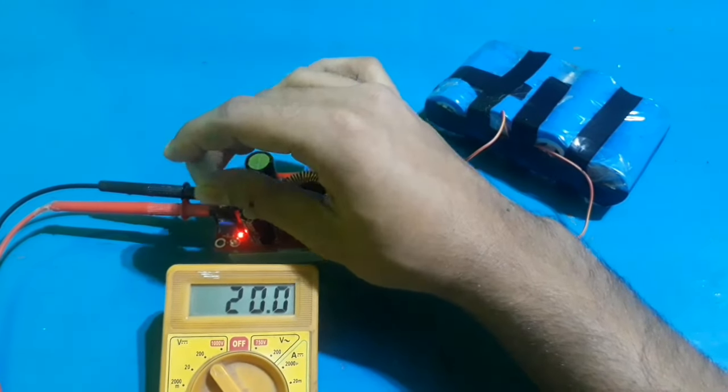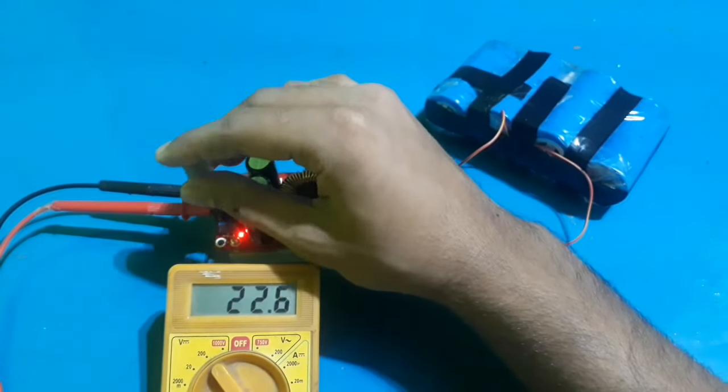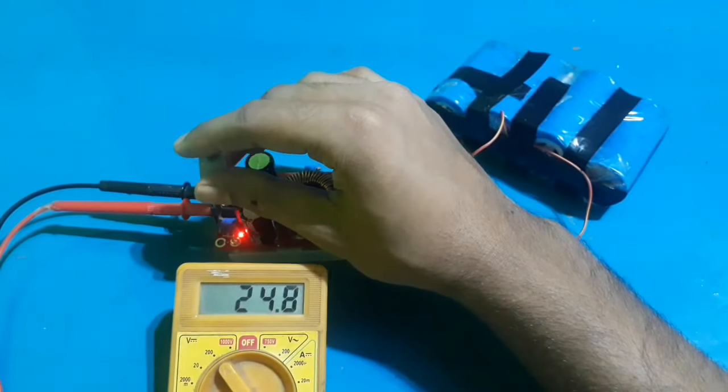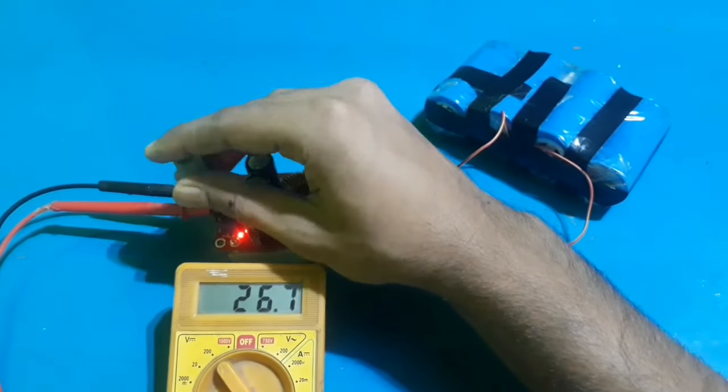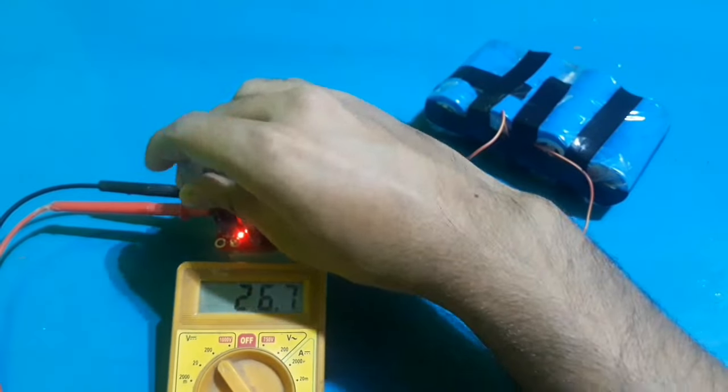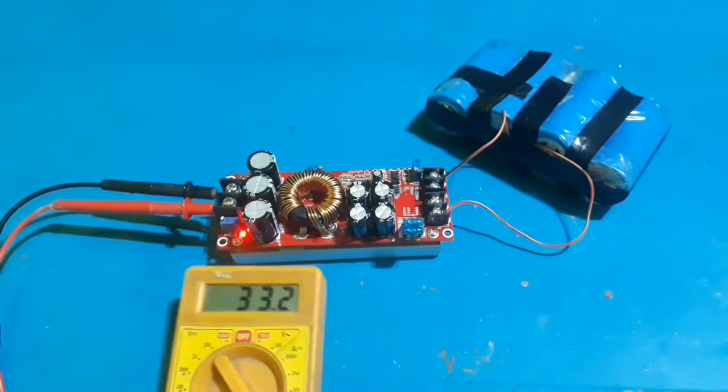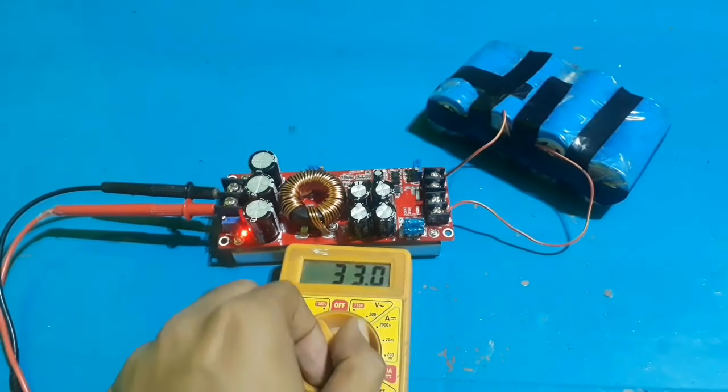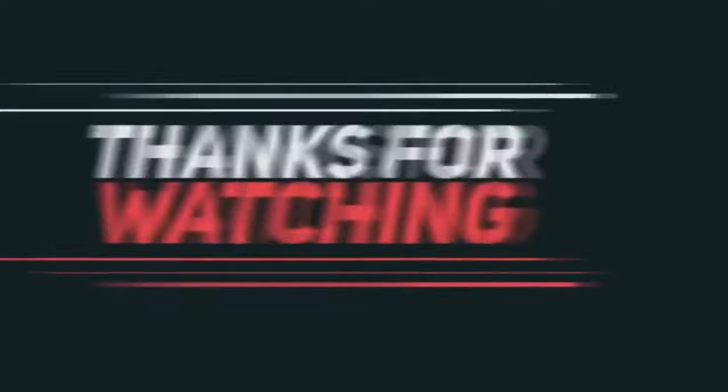Now you can increase the output voltage up to 80 volts. When your battery is nearly discharged, set the low battery voltage protection to protect the battery from overload. Thanks for watching and have a good day.